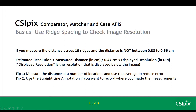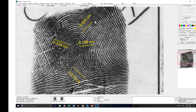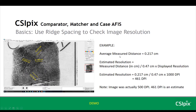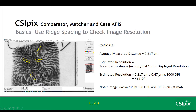Tip two is that you can use a straight line annotation to take these measurements if you want to record where you made the measurements for documentation. Here's an example where I used the straight line tool to measure the distance at four different locations. The average of those four measurements is 0.217 centimeters. So the estimated resolution will be 0.217 divided by 0.47 times the displayed resolution. In this image, the displayed resolution was 1000 DPI, so 0.217 divided by 0.47 times 1000 equals 461 DPI. This is only an estimate — I know this image was actually 500 DPI.